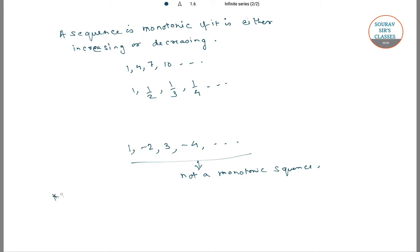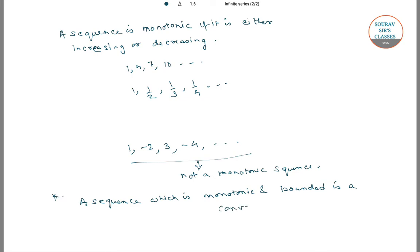A sequence which is monotonic and bounded is a convergent sequence. That is, if a sequence is monotonic and it is bounded, then that sequence is also a convergent sequence.